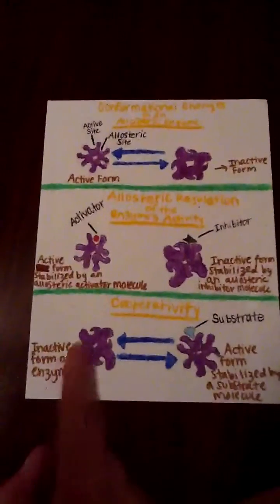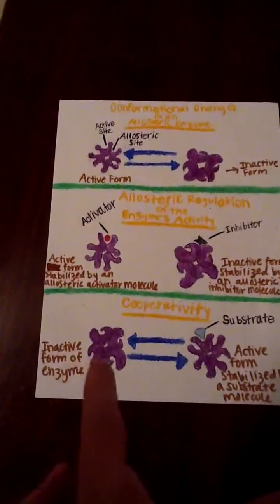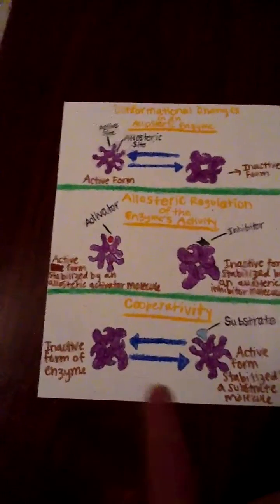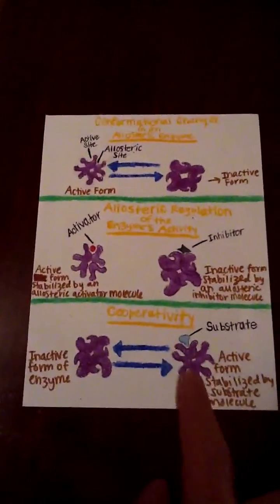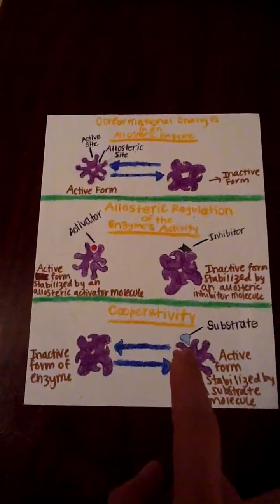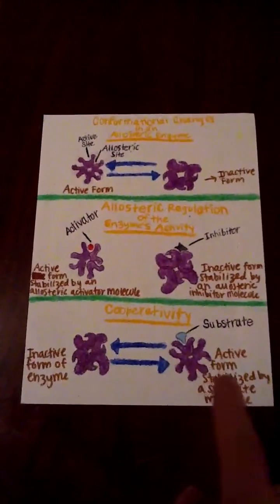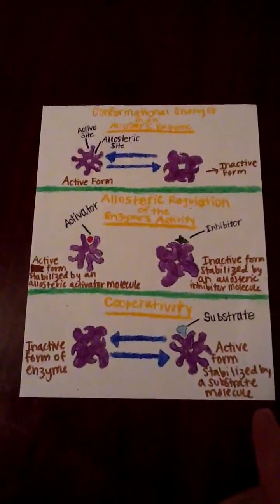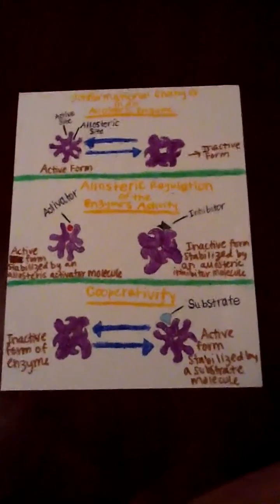Down here we have cooperativity. This would be the inactive form of the enzyme, and up here would be the substrate — this would be the active form stabilized by a substrate molecule.